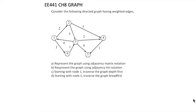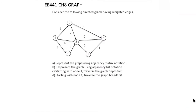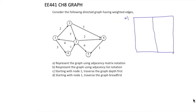Part D: Starting with node 1, traverse the graph using breadth-first traversal algorithm. Let's start with Part A. In Part A we are going to use an adjacency matrix notation. Since the graph has 6 nodes, we will have a matrix with 6 rows and 6 columns.